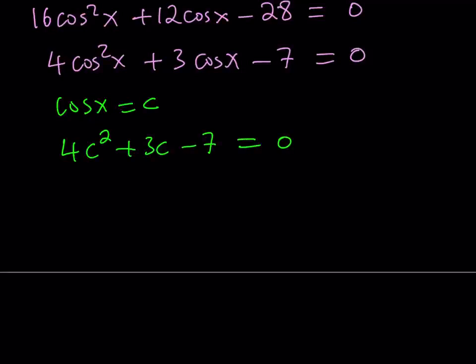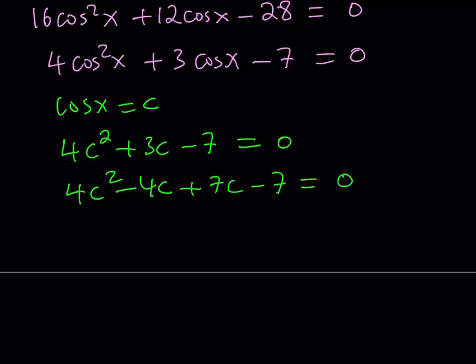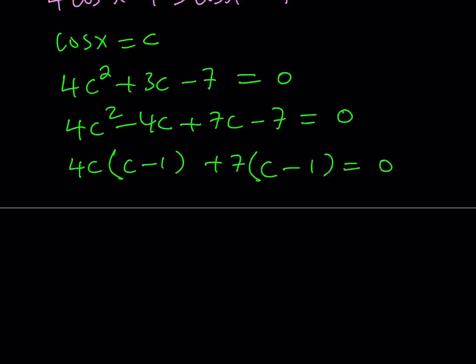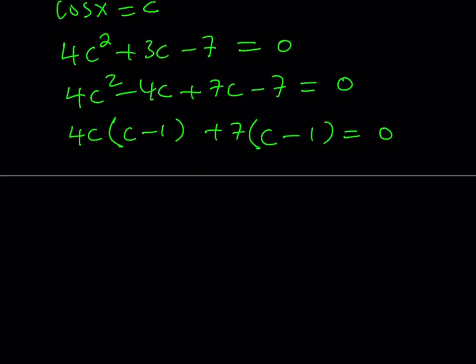Since c equals 1 is a solution, I can factor it. I can write it as 4c squared minus 4c plus 7c minus 7, which gives 4c times the quantity (c minus 1) plus 7 times (c minus 1). Taking out (c minus 1), you get (c minus 1)(4c plus 7).